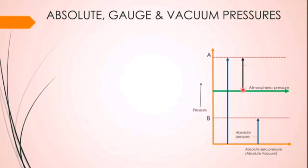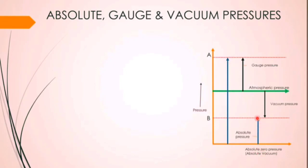If I calculate the same pressure from the atmospheric pressure line, that is known as gauge pressure. For point B, the pressure is below the atmospheric pressure — that type of pressure is known as vacuum pressure. Simply: any pressure taken from absolute zero is absolute pressure; any pressure above atmospheric pressure is gauge pressure; and pressure below atmospheric pressure is vacuum pressure.